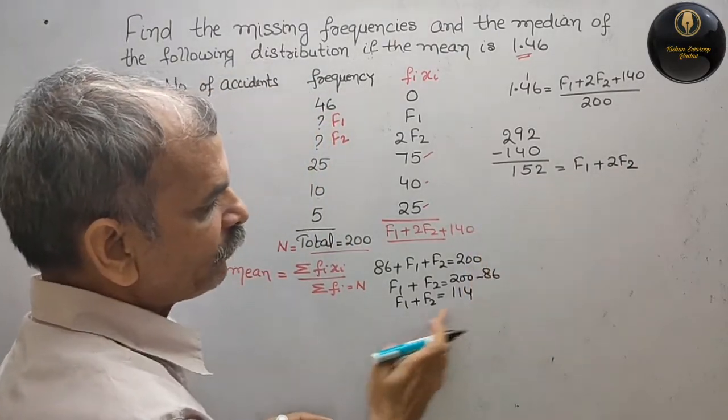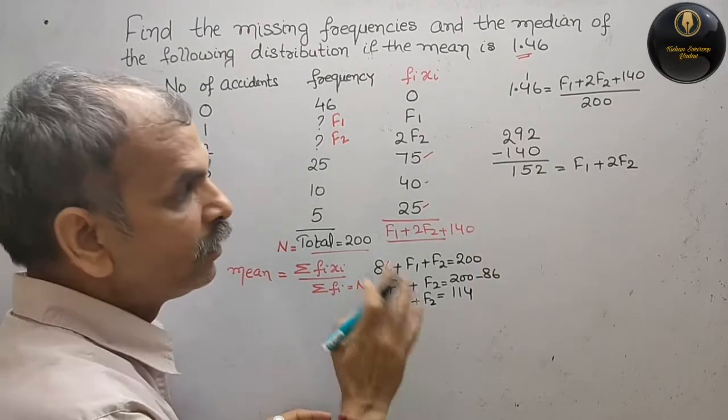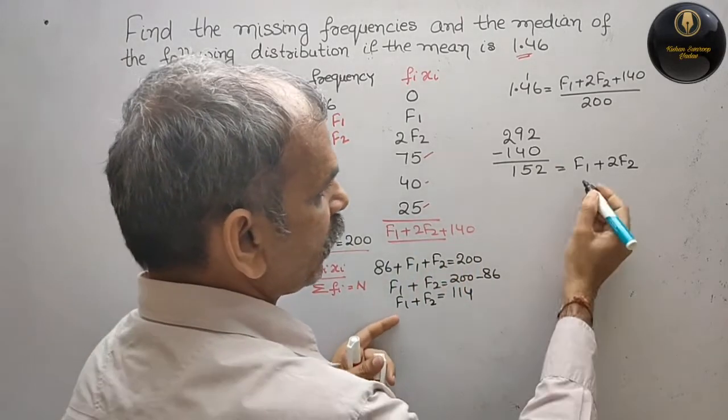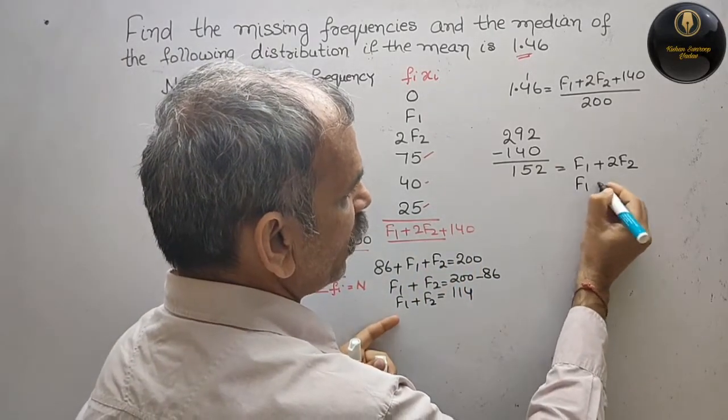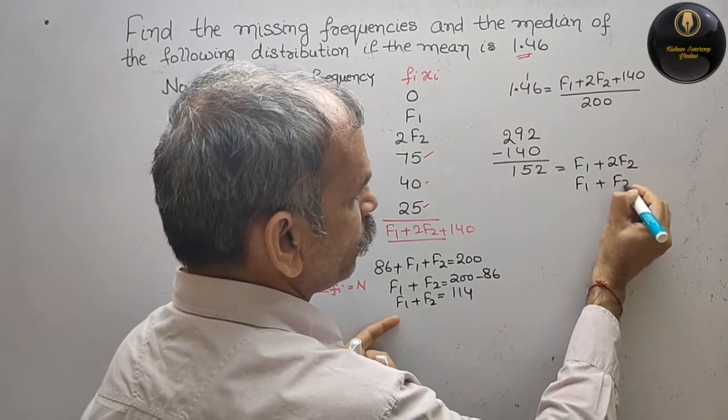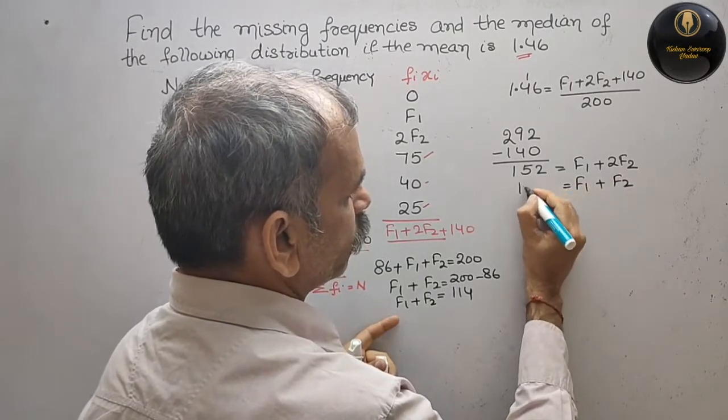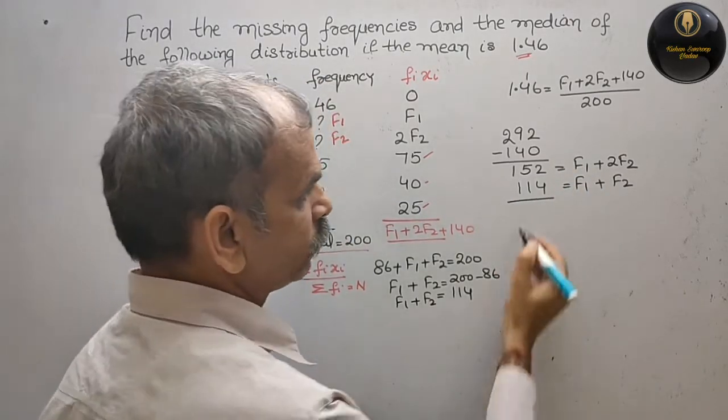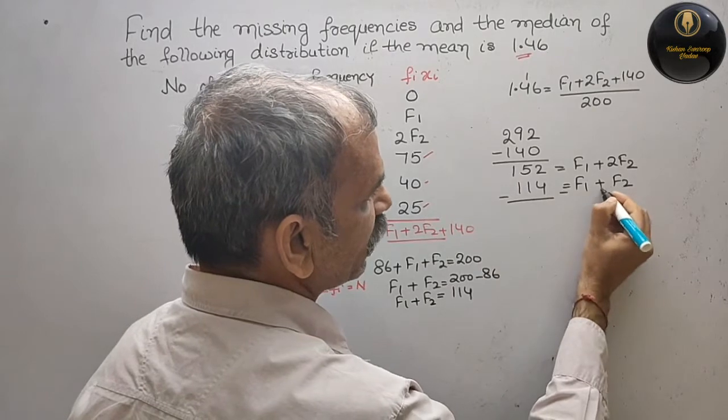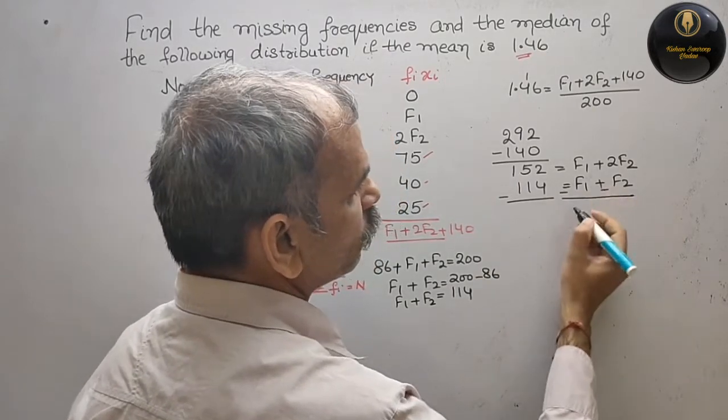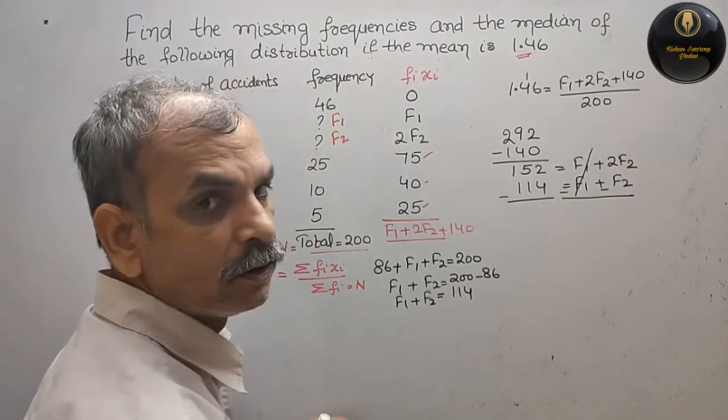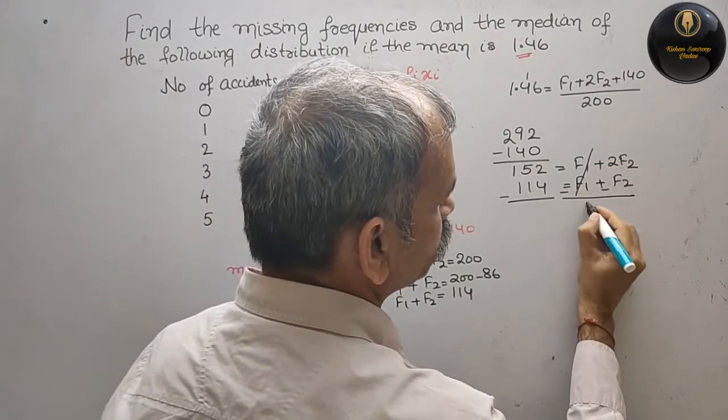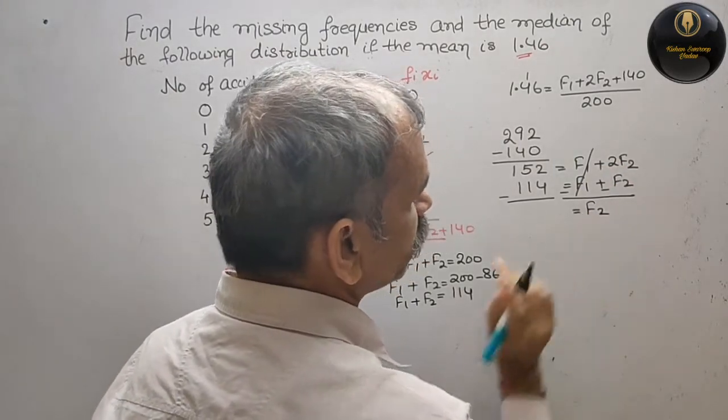This will come as f2. You can add this. This is equal to f1 plus f2 is equal to 114. Now minus, minus, minus and minus. What we will get? This will go out. So this will come as f2.